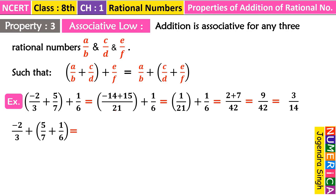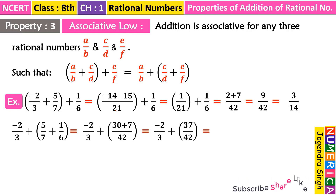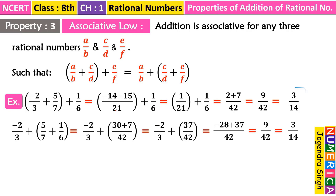Now the second association: we keep the first number the same and group the second and third rational numbers. LCM of the second and third is 42, and the numerator is 30 + 7 = 37. So we have −2/3 + 37/42. After taking LCM we get 42, and in the numerator −28 + 37 = 9. So we get 9/42, which simplifies to 3/14 — the same number as before.